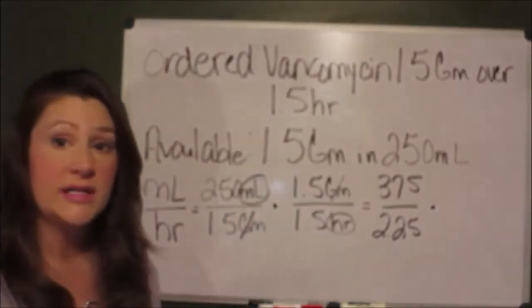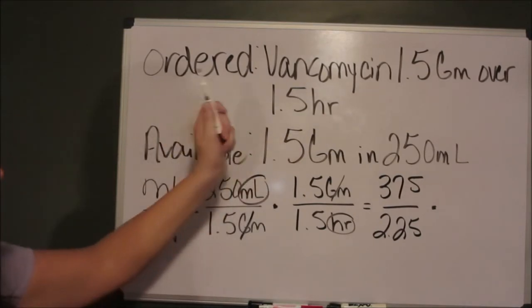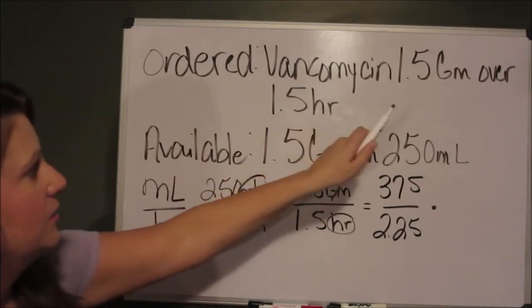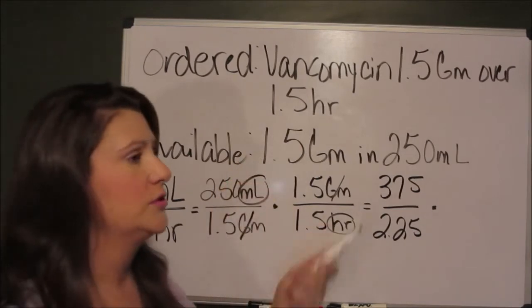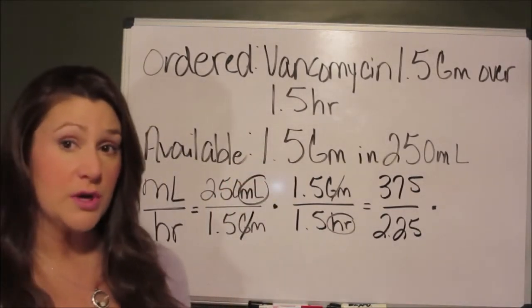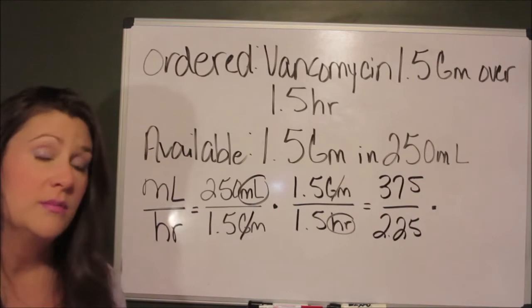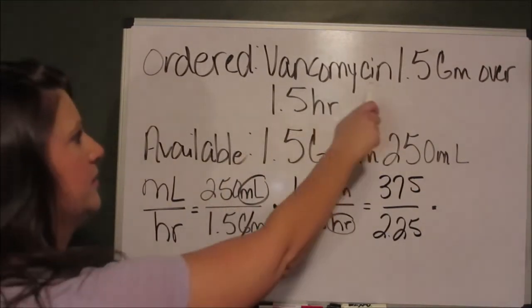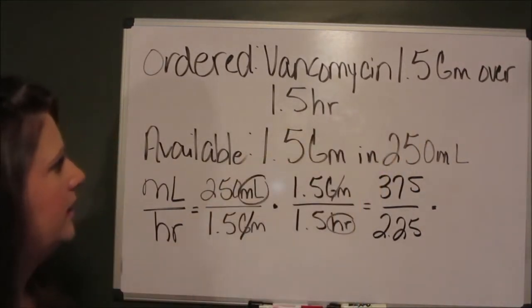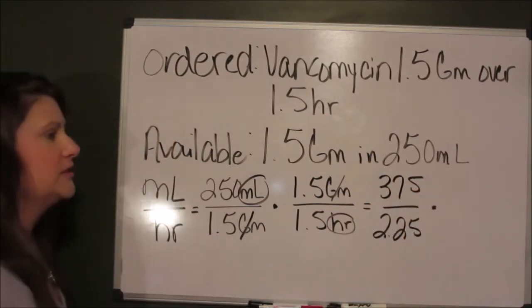This problem is a little bit more complex than the last one we just worked. This problem is asking us about vancomycin: 1.5 grams to infuse over 1.5 hours. We know that anything that has to infuse over a prolonged period like that, we're going to have to put it on an IV pump. If we have to put it on an IV pump, we need to express our answer in milliliters per hour. We have available 1.5 grams in 250 milliliters.